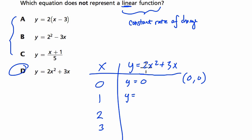When I plug in 1 for X, we get 2 times 1 squared. That's 2 times 1, which is 2, plus 3 times 1, which is 3, equals 5. So, so far we have the point (1, 5).